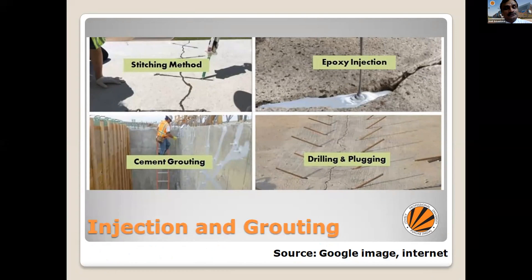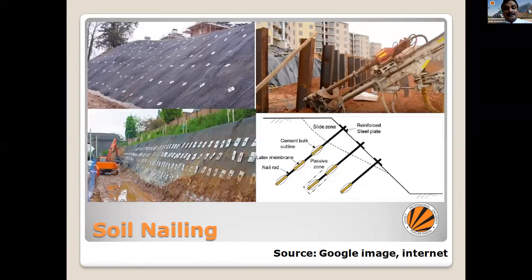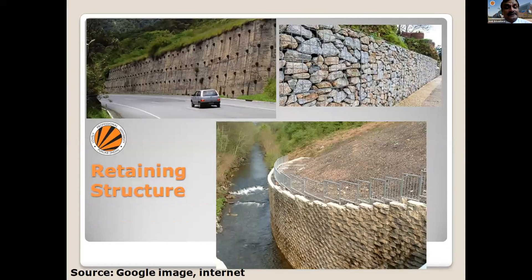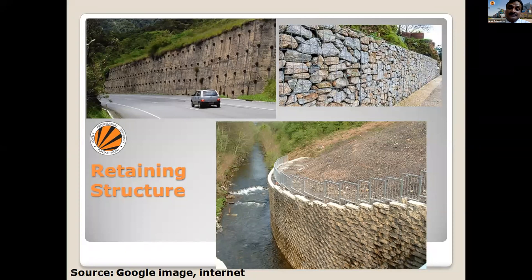As a soil engineer, you know what the stitching method is — epoxy injection, cement grouting, drilling, or plugging. Soil nailing is one of the most widely used techniques for protecting natural slopes. Just as you put reinforcement in concrete, you put reinforcement in the soil because both are weak in tension. Similarly, you provide retaining walls to protect natural resources. Different types of retaining structures are provided, and you can see how well they protect this natural drain — otherwise it would slide, block drainage, and cause trouble.